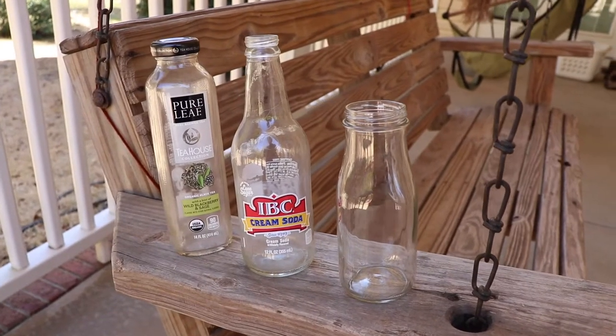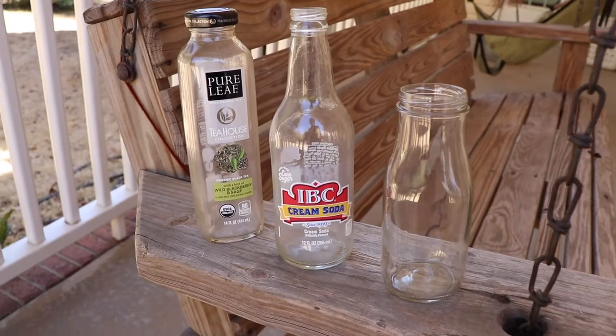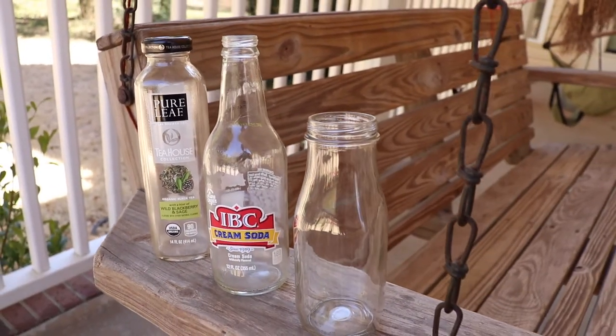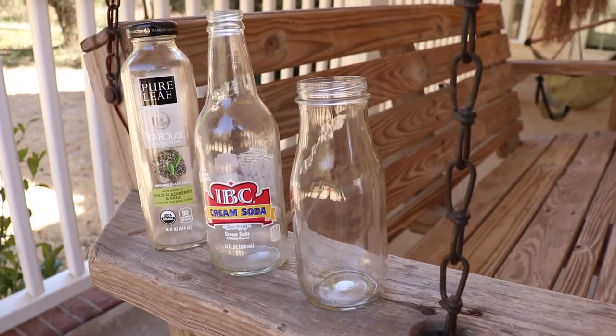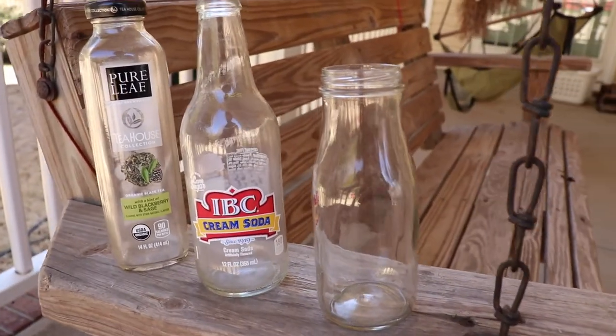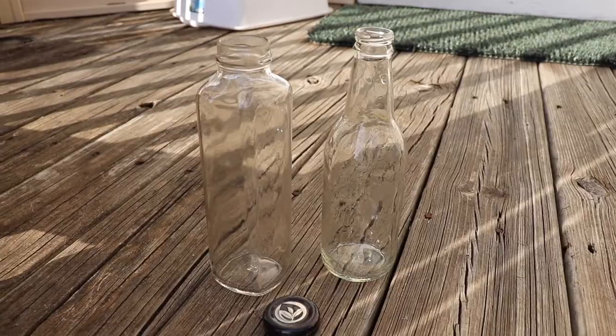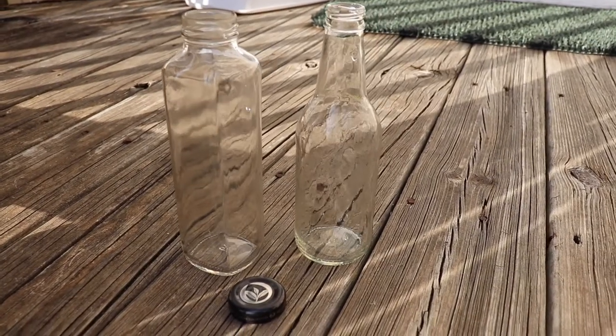First, decide what container you want to use. I had a handful of glass jars to choose from, and I opted for the jar that was already clean. If you need to clean your jar, carefully use a razor blade to remove the label. Then, a little goo gone and some elbow grease will clean off the sticker residue. Lastly, wash the goo gone off and leave your jar in the sun to dry.